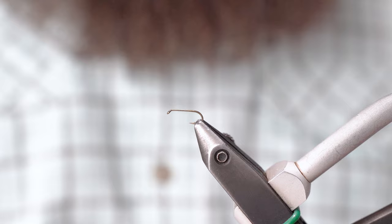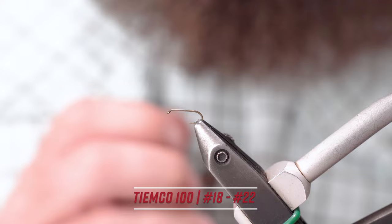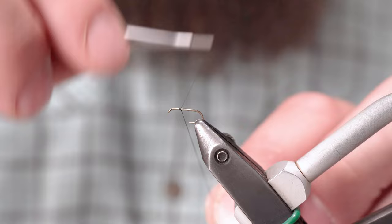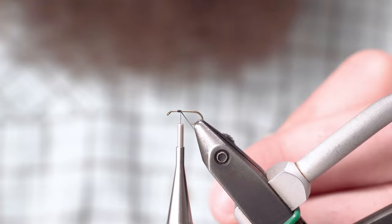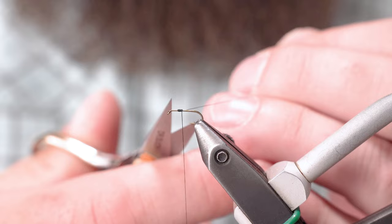So we're starting with a TMC size 18, 100 hook. Also starting with a Uni ADOT in black.